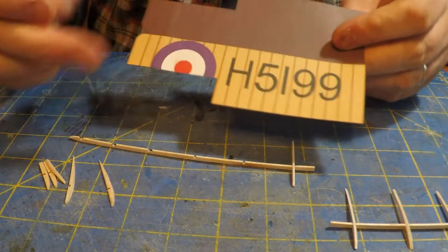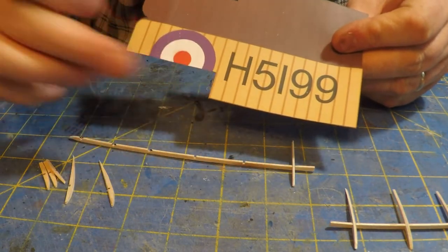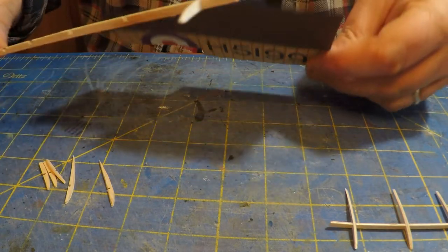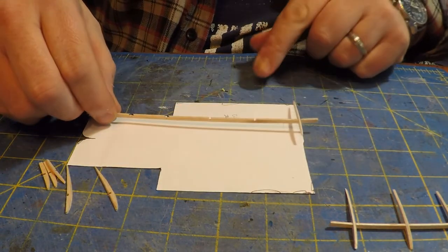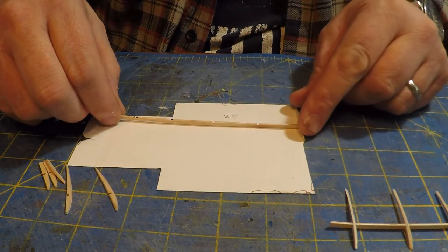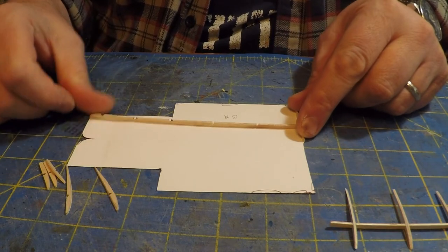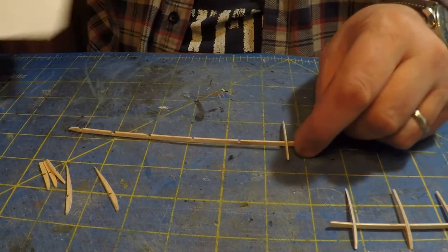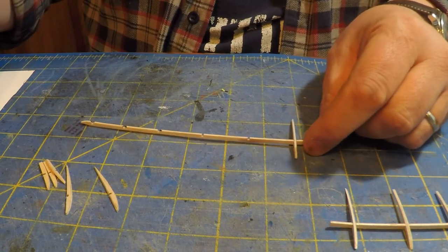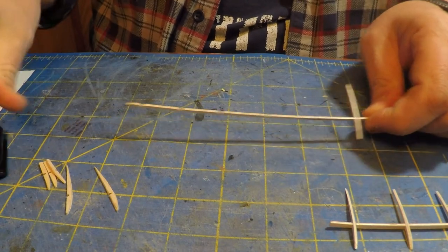There is the bottom wing spar. That's the right one, and what it's going to do is go right up about there when it gets glued in.